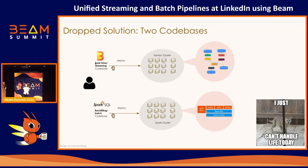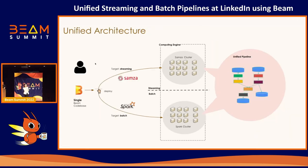Then we came to one question: is it possible to maintain only one code base, but with the ability to run it as both a batch job and a streaming job? Here comes our next solution. We want to maintain a unified architecture using Beam. As we can see from the slide, now our users only need to maintain one code base written in Beam. When deploying, it can be deployed either as streaming or batch. If the target is streaming, then the SAMSHA runner will execute this pipeline as a streaming job, the same as how we handle real-time processing now. If the target is batch, then the pipeline will be executed by Spark Runner, which is only for the backfilling cases. In order to keep the code exactly the same between streaming and batch, we introduce a concept called unified pipeline.